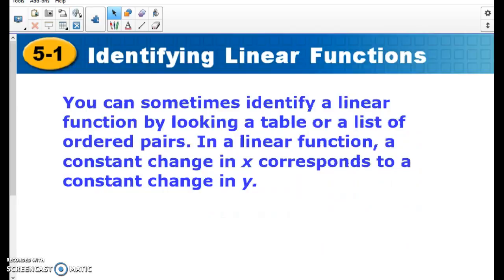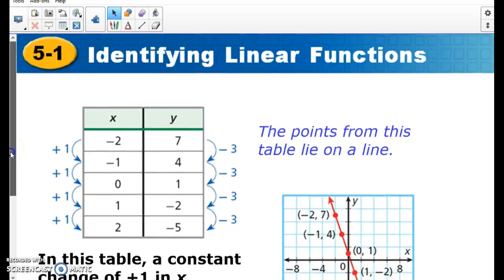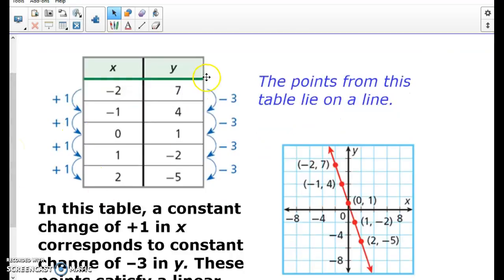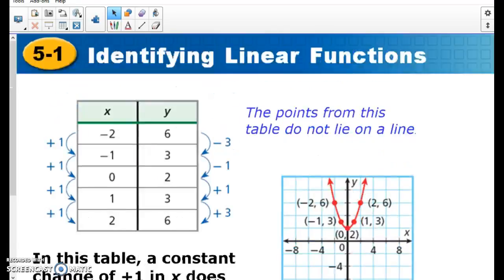And like we talked about before with linear functions, we can identify if it's linear by looking at the ordered pairs. And a constant change in x corresponds to a constant change in y. So something like this, x is changing by 1 every time, y is changing by minusing 3 every time, so I know it's going to be a linear function. So we wouldn't have to graph a problem like this if we can see a change from all the x's and all the y's. We know it's linear.